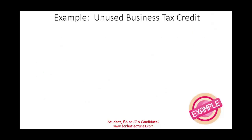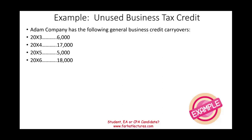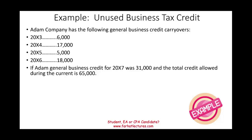Let's illustrate how unused business tax credits work using FIFO. Assume Adam Company has the following credit carryovers: Year X3 — $6,000; Year X4 — $17,000; Year X5 — $5,000; Year X6 — $18,000. This year (X7), Adam generated an additional $31,000 in business tax credits. The total allowable credit Adam can take during the current year is $65,000.